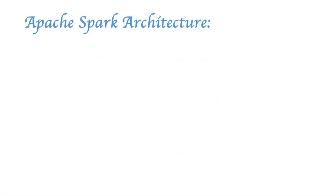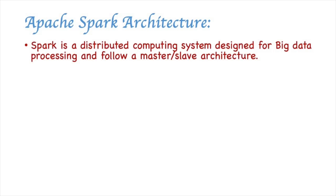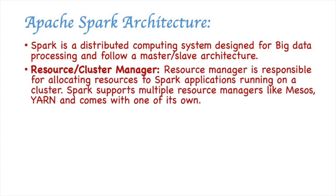Now let's see some of the definitions of Spark architecture. Spark is a distributed computing system designed for big data processing and follows a master-slave architecture. The resource manager or cluster manager is responsible for allocating resources to Spark applications running on a cluster. Spark supports multiple resource managers like Mesos, YARN, and comes with its own resource manager.